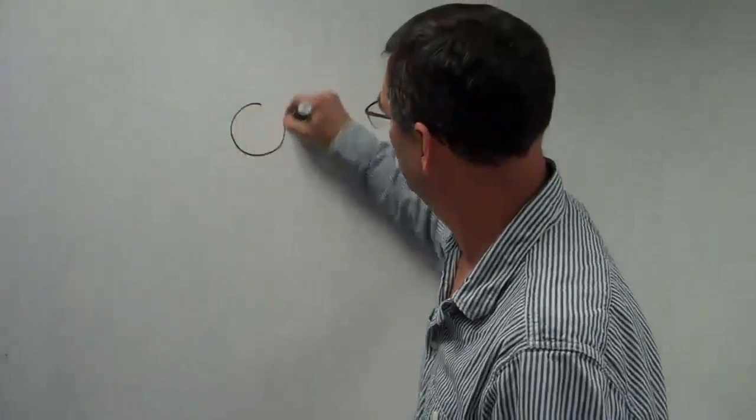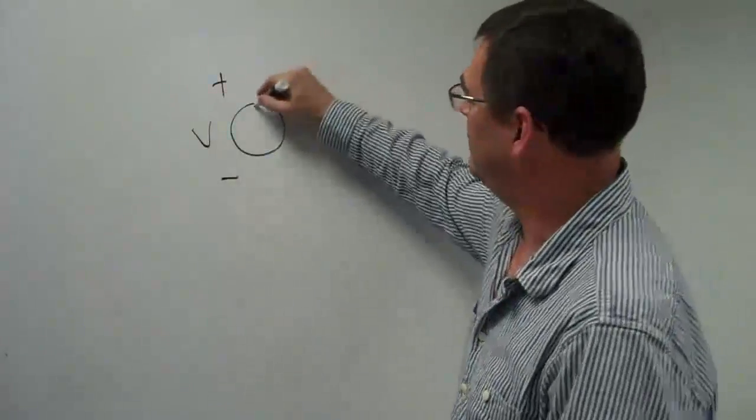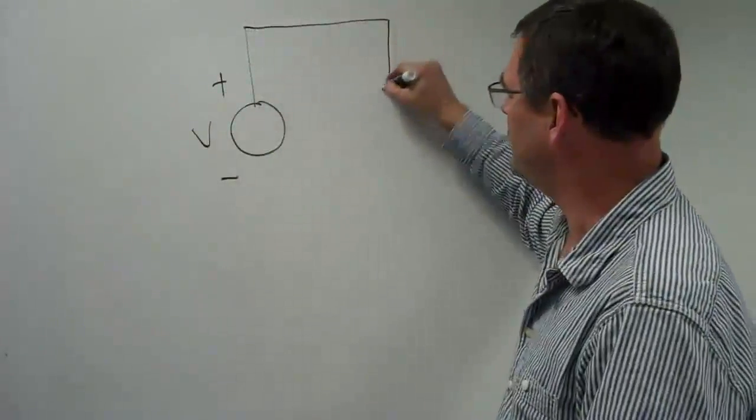This is the Ohm's Law class lab. In this lab, we're going to take a power supply or power source, schematic symbol looks like that, and we're going to connect it to a single resistor.